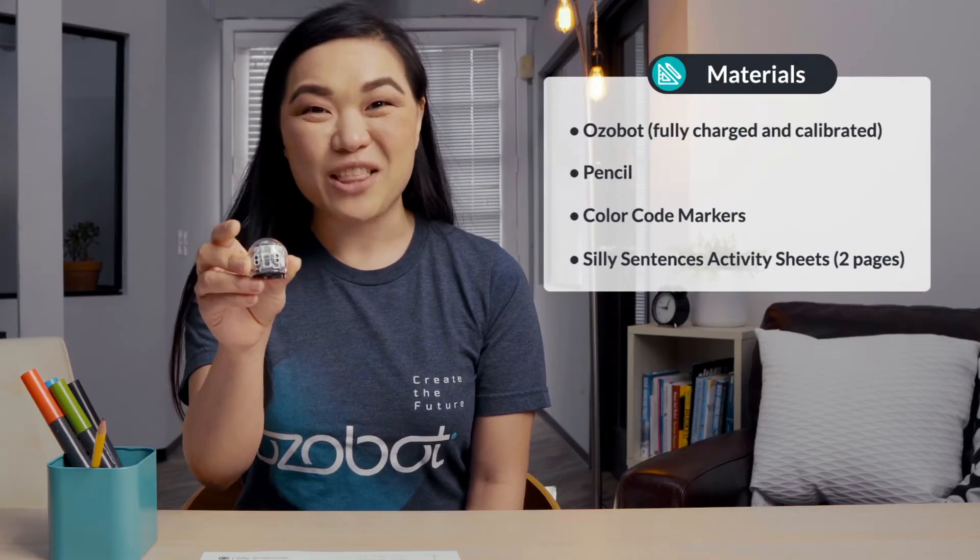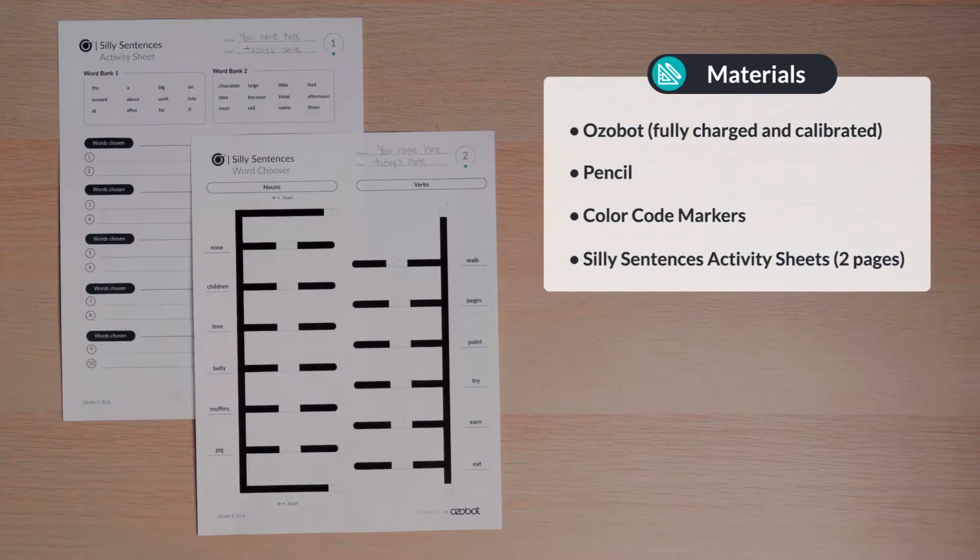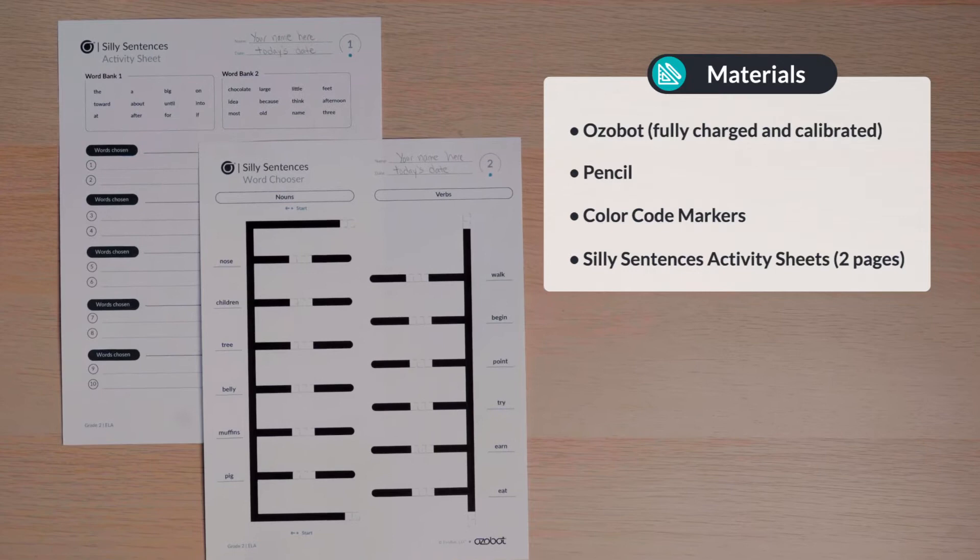For today's lesson, you will need an Ozobot fully charged and calibrated, color code markers, a pencil, and both pages of your silly sentences activity sheets.